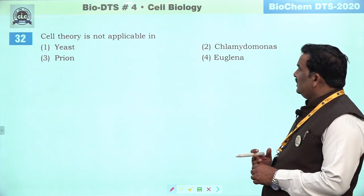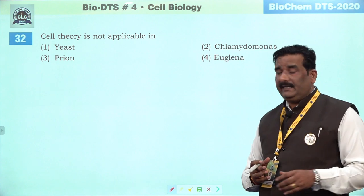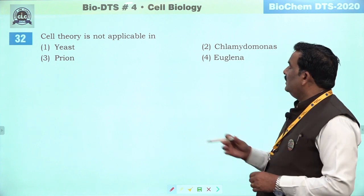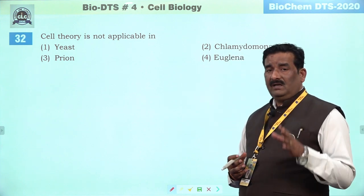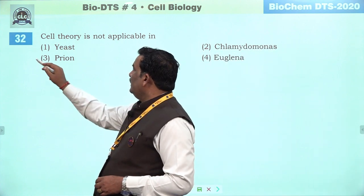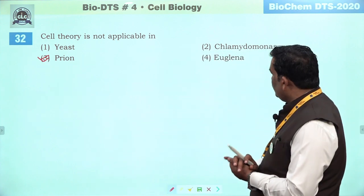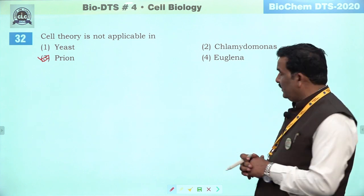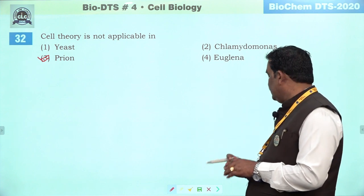Next question: cell theory is not applicable in. Cell theory ka connection cell se hai. Prion ek option mein hai — prion are eukaryotic organism — they do not represent cell theory. East eukaryotic hai — usmein theory paai jaati hai, Chlamydomonas eukaryotic hai, Euglena eukaryotic hai — they represent cell theory, but prion does not. Third is the better option.